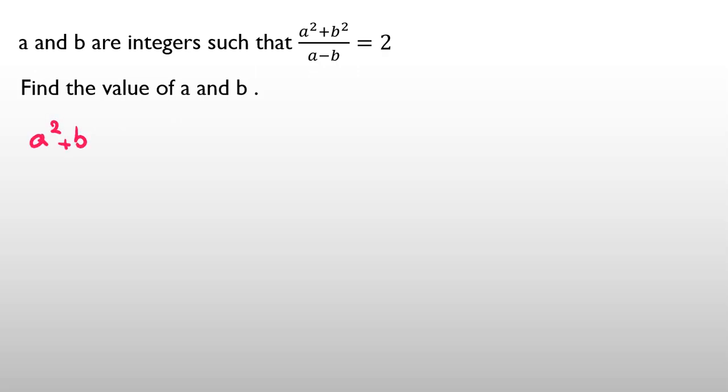If we write a squared plus b squared over a minus b equals 2, we want to get rid of the denominator, so we multiply by a minus b. a squared plus b squared equals 2 times a minus b.